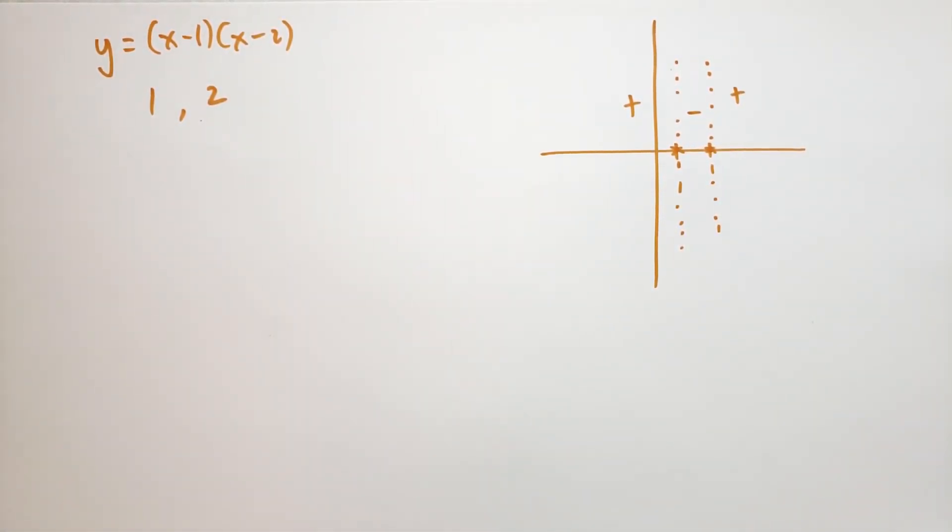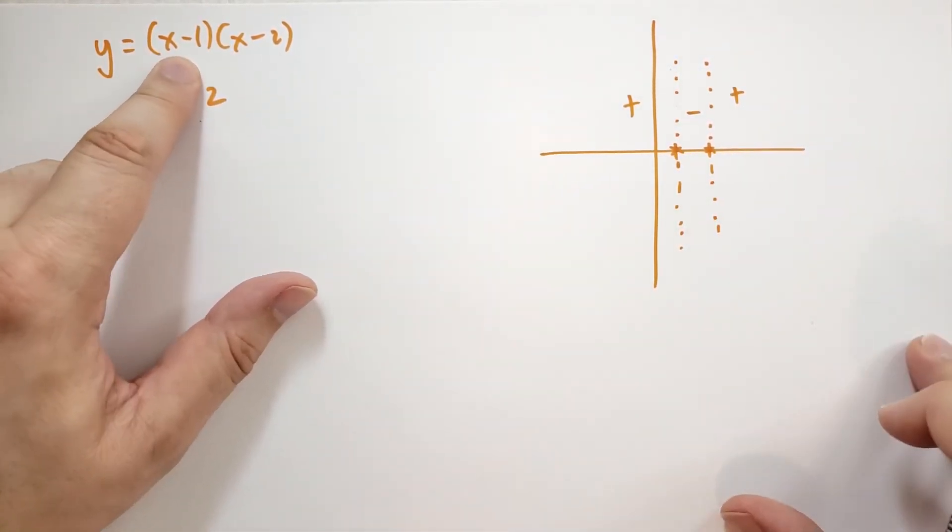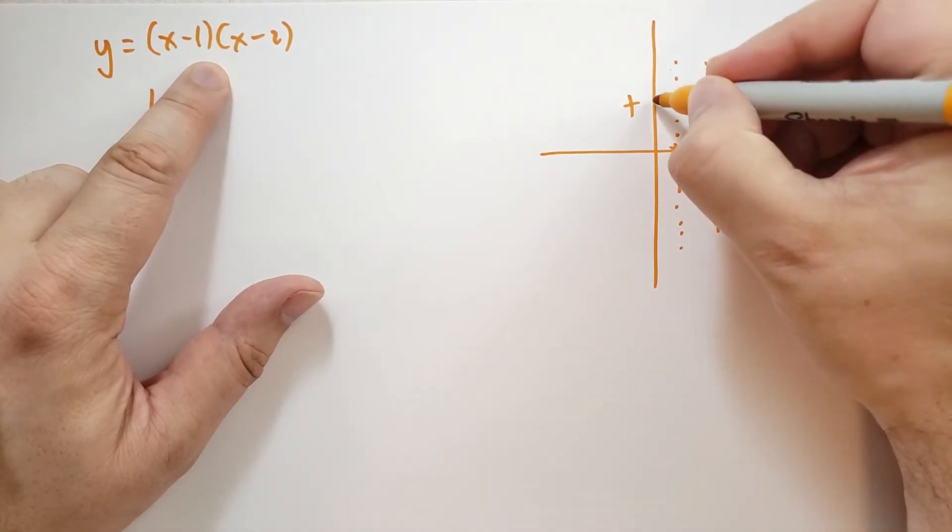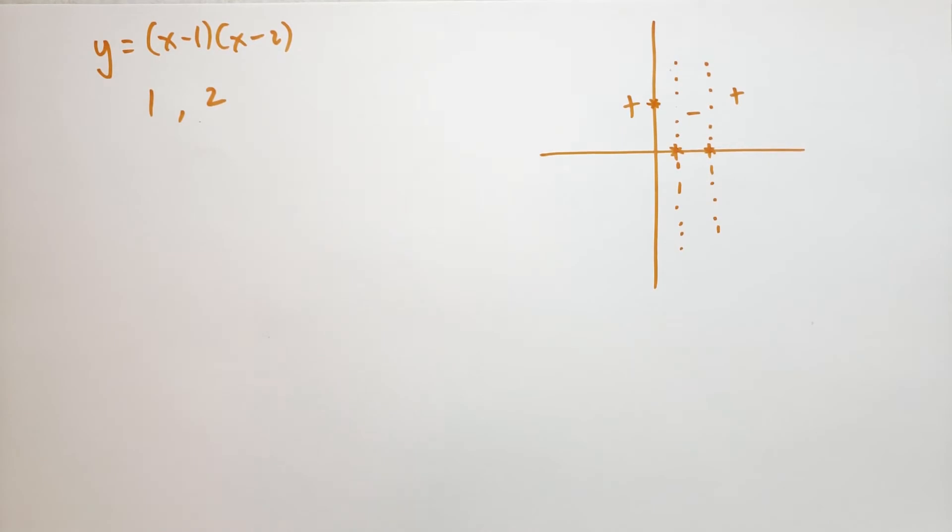And that kind of starts to give us a little picture of what's going on. We could also plug in what happens when x equals 0. So at x equals 0, we have minus 1 times minus 2. So that's going to give us the value up here, so it's going to intersect there. And indeed, we have a graph that you should recognize as a parabola.